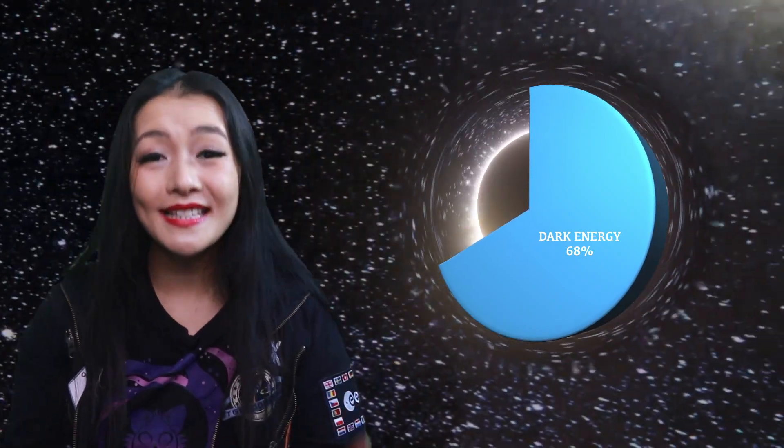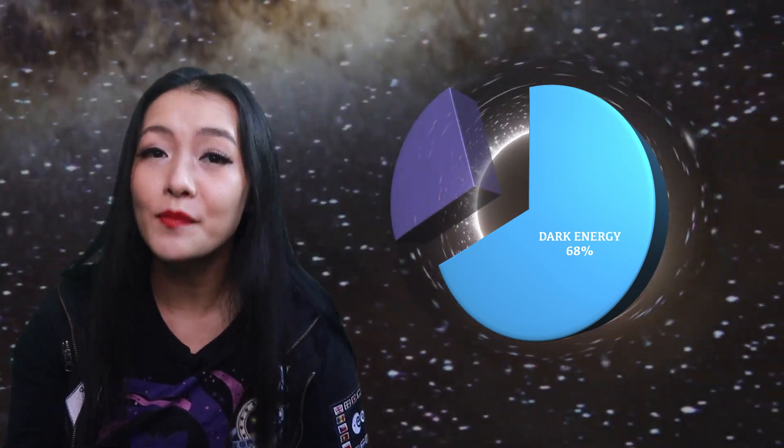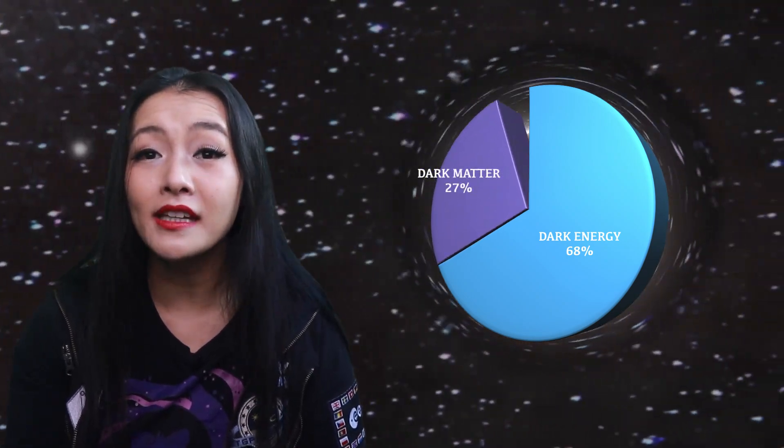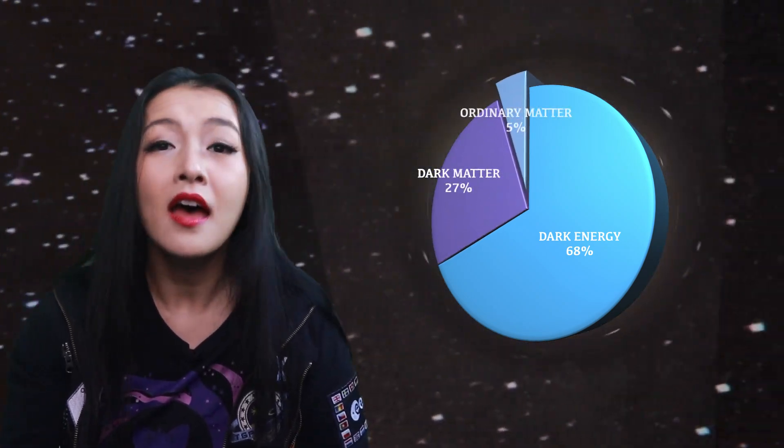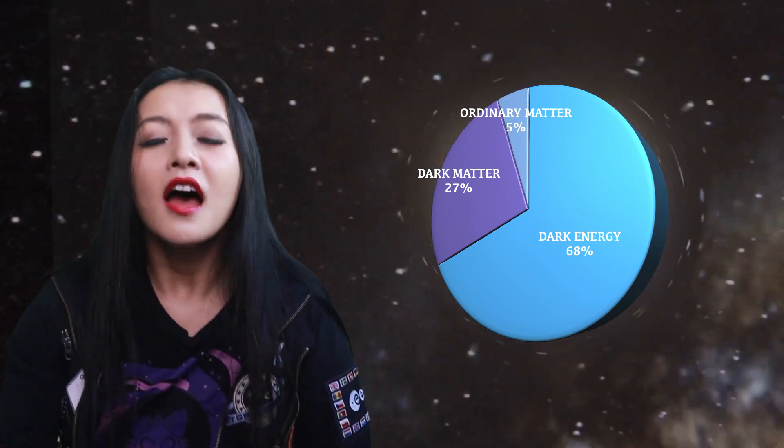In the budget of our universe, about 68% of our universe is dark energy. That's the majority of our universe. Only 27% is dark matter, and the remaining 5% ordinary matter that we're more familiar with interacting with in our day-to-day lives. That is a lot of dark energy hiding in those tiny little black holes.